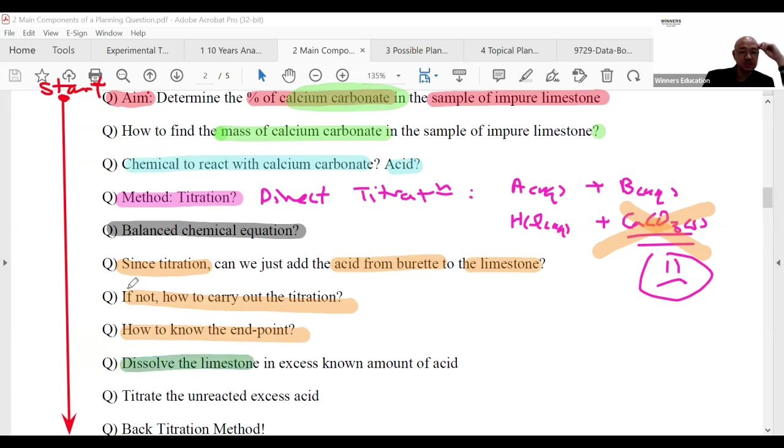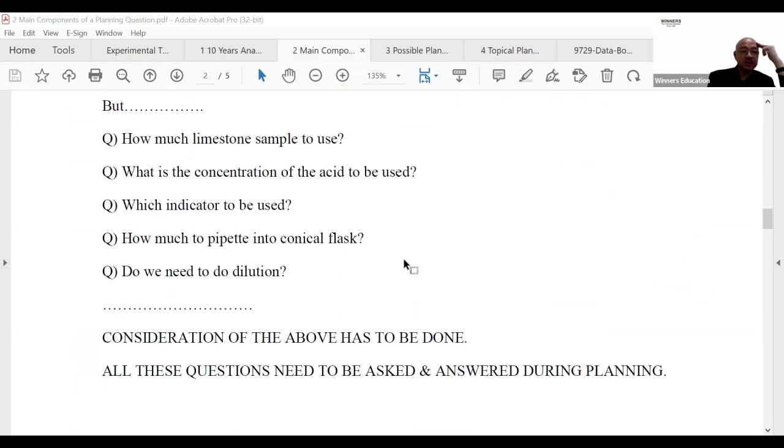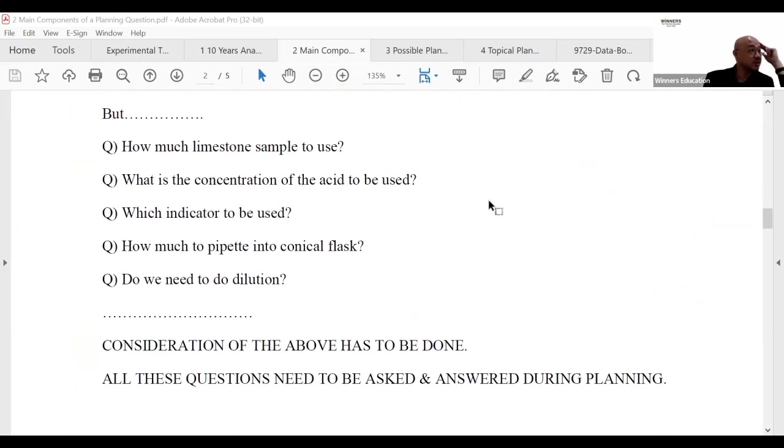The step will be: I need to first dissolve the limestone, the limestone which has calcium carbonate, in excess of the acid. Then I'm going to titrate the unreacted excess acid. Therefore everyone must agree it should be back titration, easy peasy lemon squeezy. So back titration it shall be.